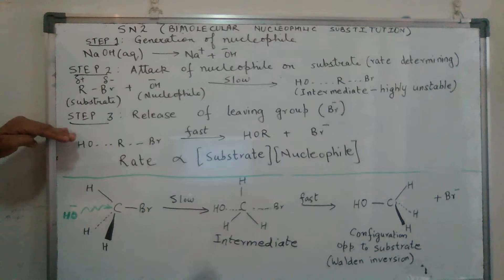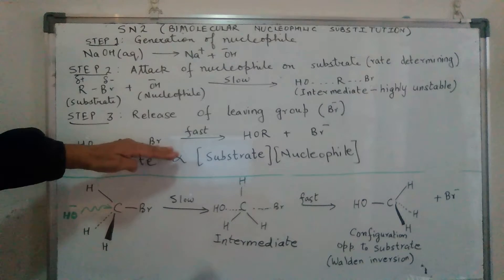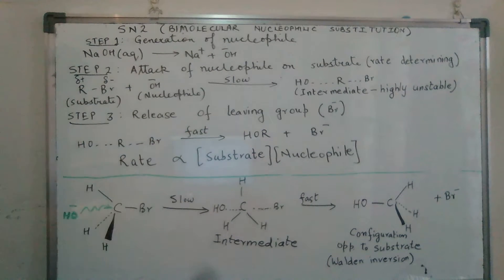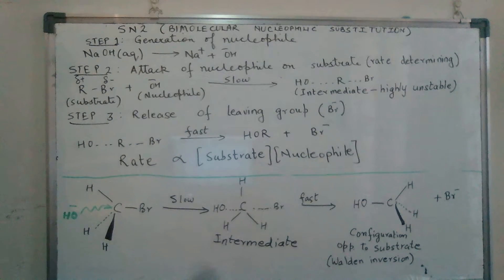So we have the next step where the intermediate tends to release the halide ion, forming the final product which is an alcohol over here. This would be a fast reaction.